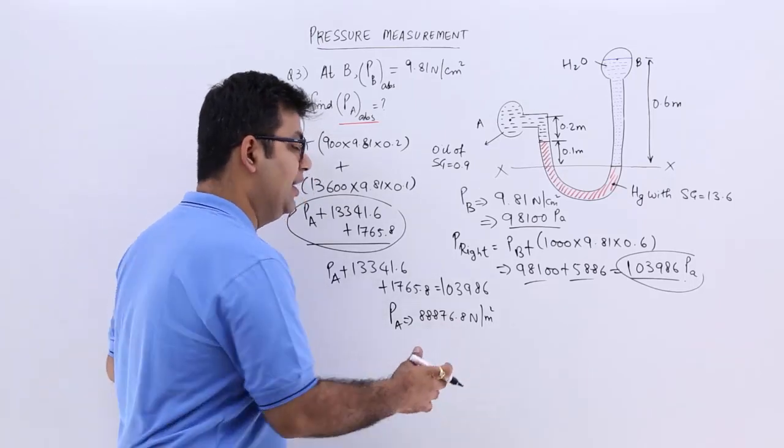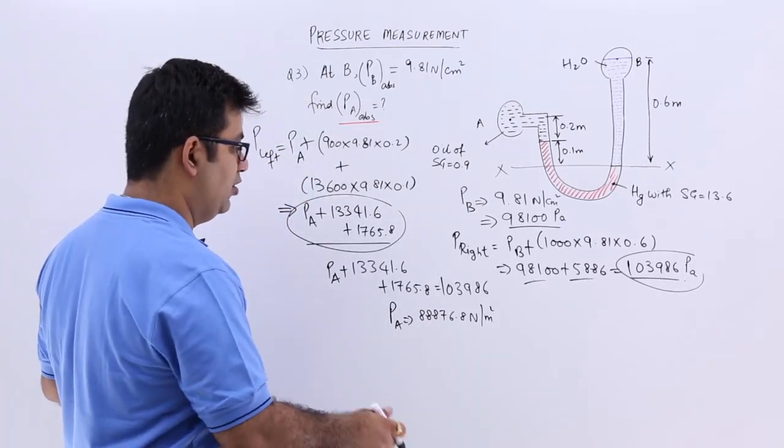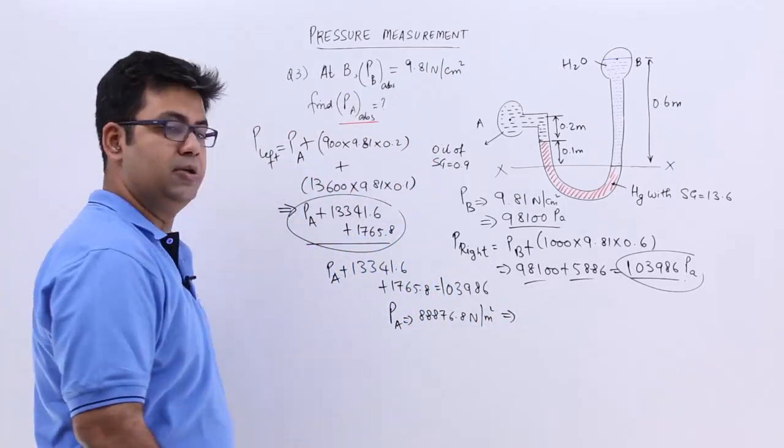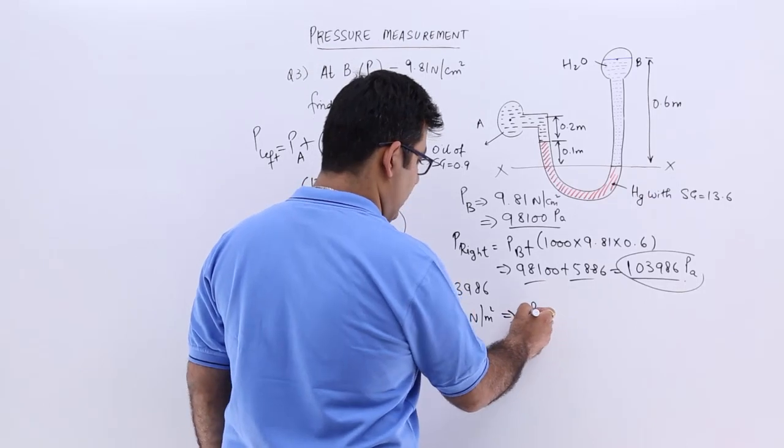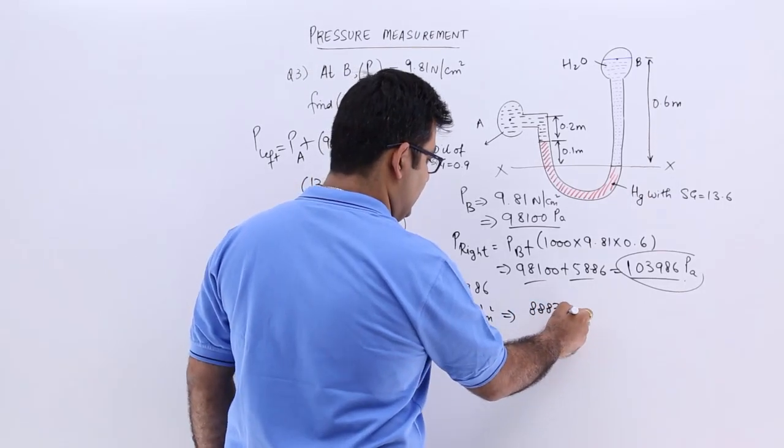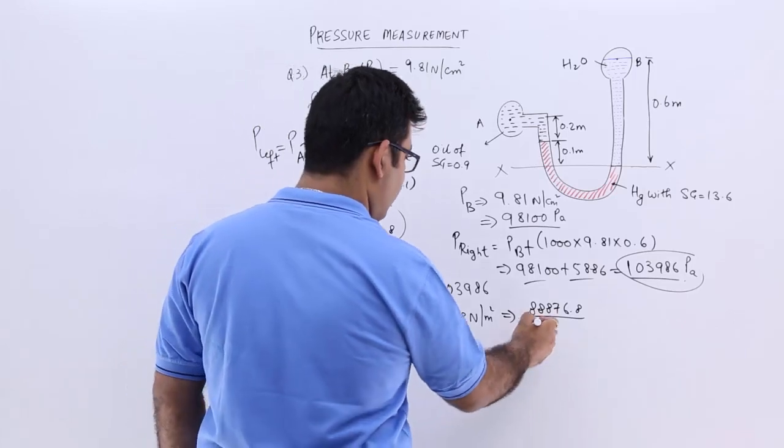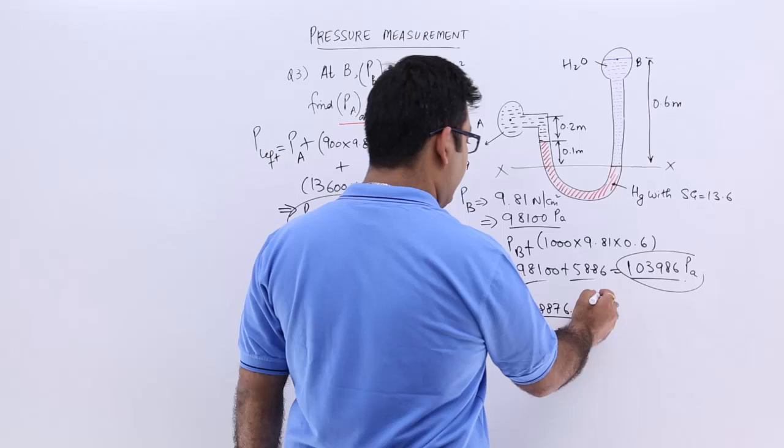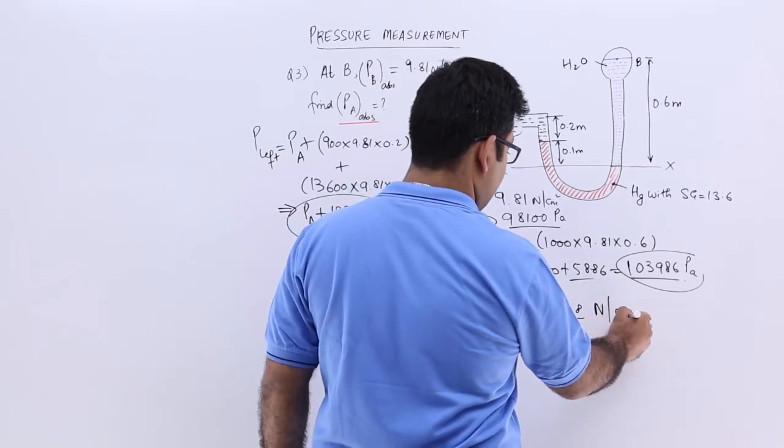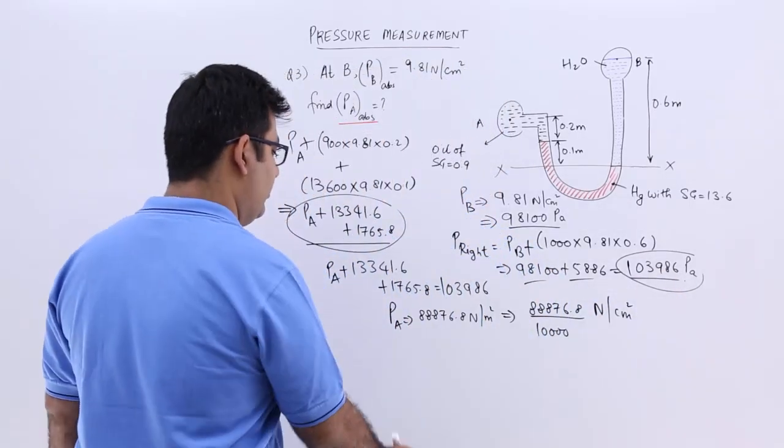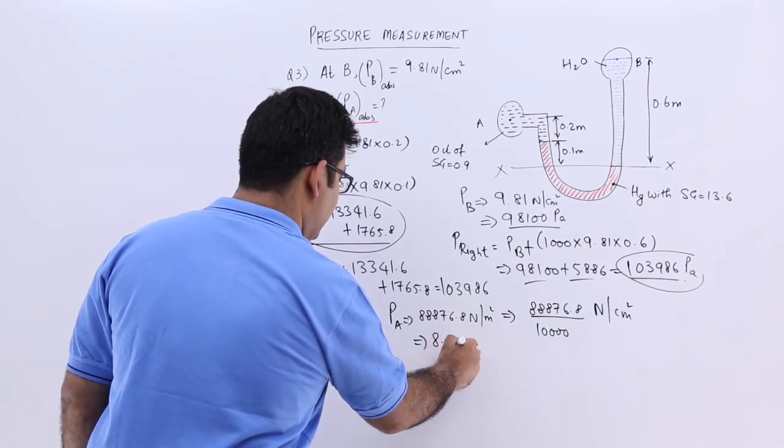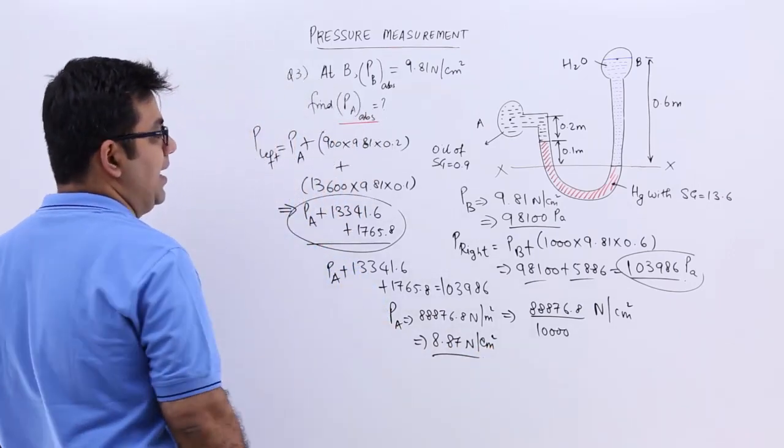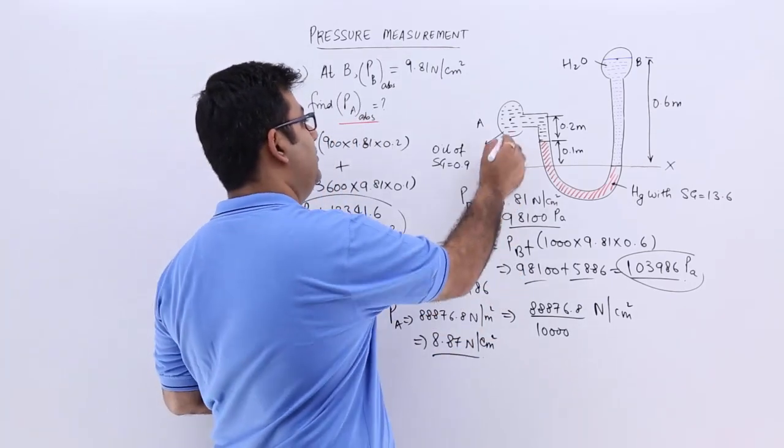So PA would come about to be 88876.8 newtons per meter square. So this is a fairly large value to write down every time. So let's convert it into CGS units. I will divide this by 10,000 or 10 to the power 4. So 88876.8 divided by 10 to the power 4. That would give you newtons per centimeter square. And this will be equal to 8.87 newtons per centimeter square.